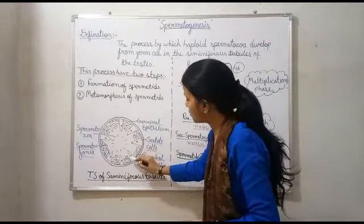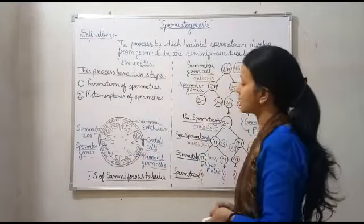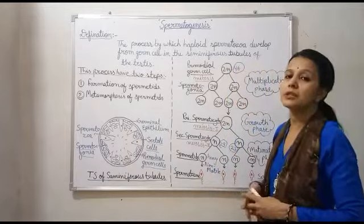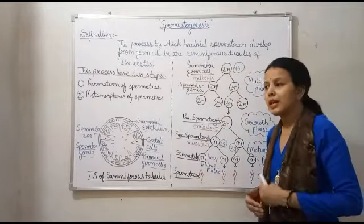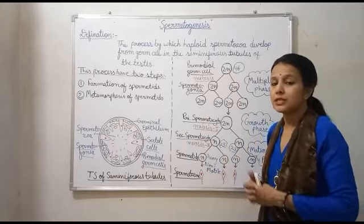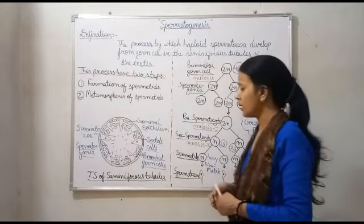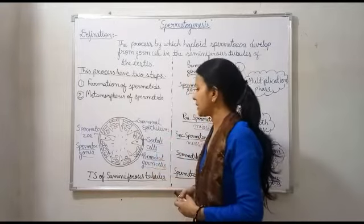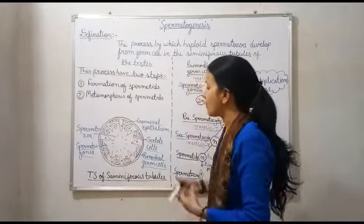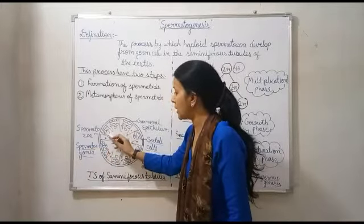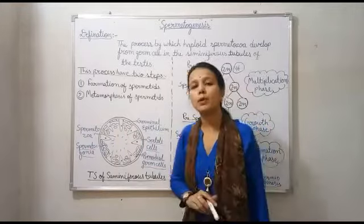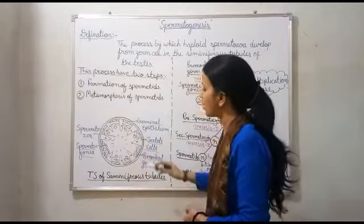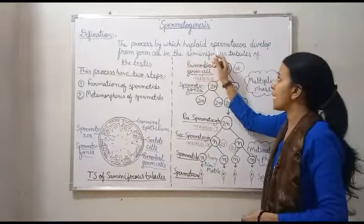Primordial germ cells एक ऐसी cells हैं जो इस पूरे process को start करती हैं। यह primordial germ cells mitosis process के through divide होती हैं। Mitosis के अंदर cells divide होकर अपनी ही जैसी same cells बनाती हैं जिनका chromosome number remaining same रहता है। Somatic cells के अंदर इस type का division होता है। तो primordial germ cells जब divide होंगी mitotic division के through, then they will form spermatogonia। Spermatogonia की formation होती है by the process of mitotic division, और इस process के बाद meiotic division start होगा।